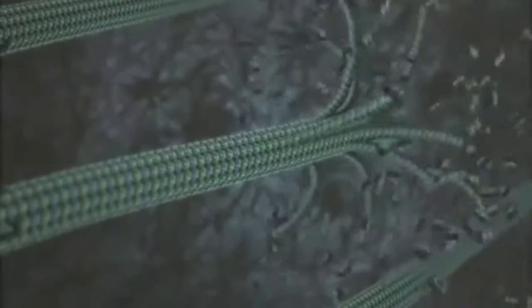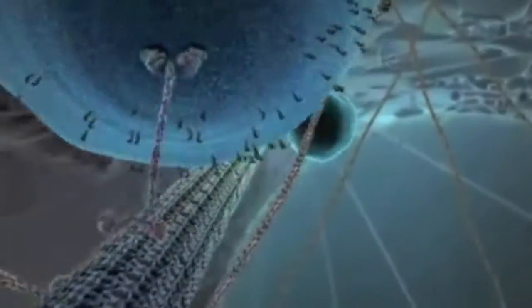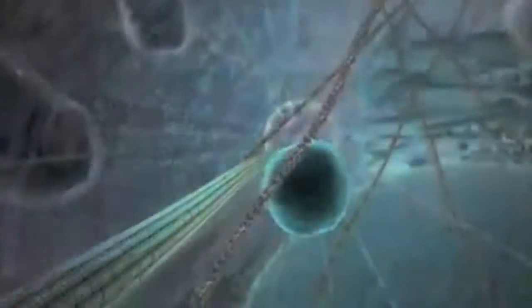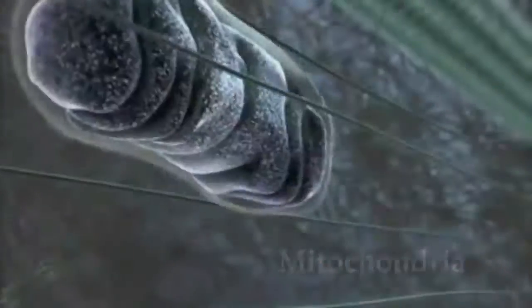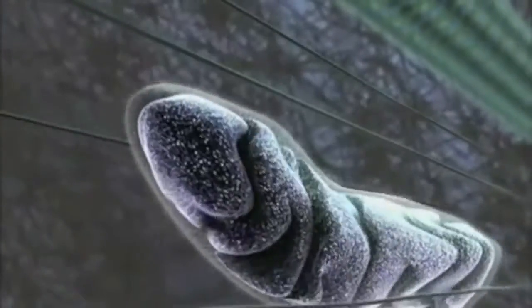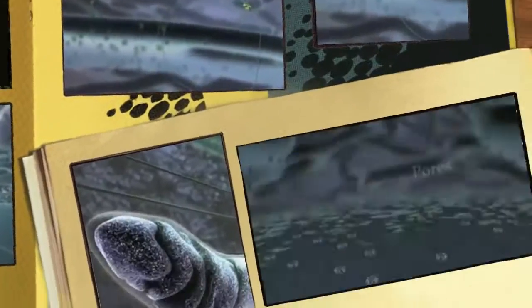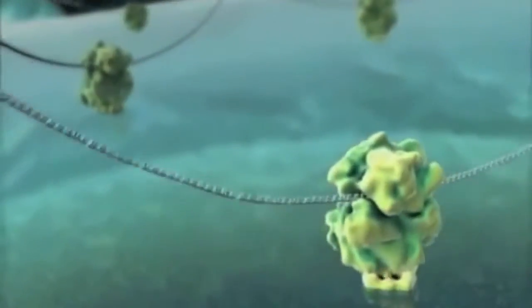However, nearly 150 years of cell research has shown us that even protozoans and fungi cells are hugely complex. Many thousands of different operations are taking place continuously within each of the cell's many parts, called organelles. The cell cannot live until all these parts are working properly.